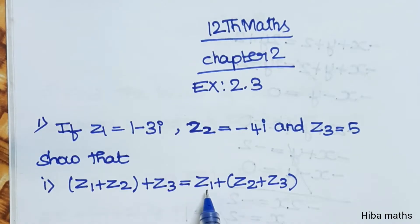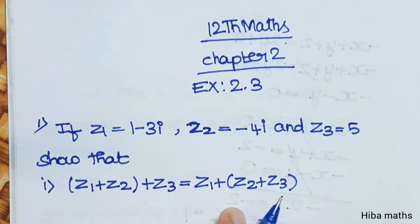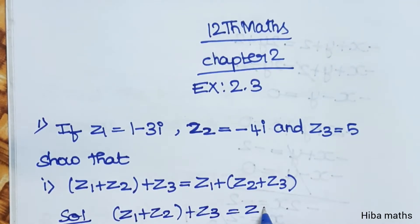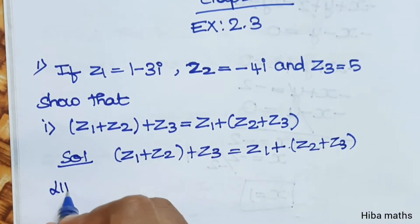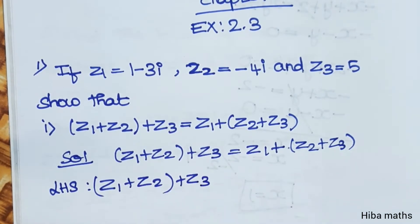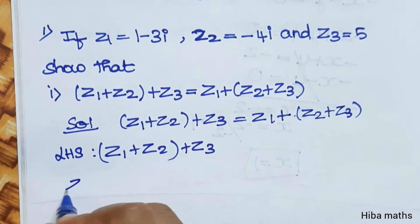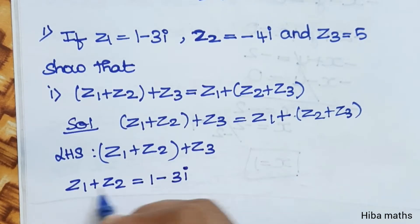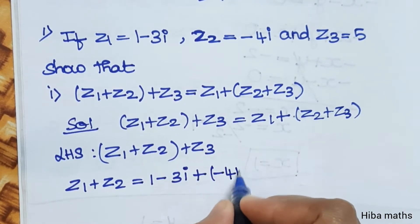We solve LHS and RHS separately. For the first step, solve LHS: z1 plus z2 plus z3. First solve z1 plus z2. z1 value is 1 minus 3i, plus z2 value minus 4i.